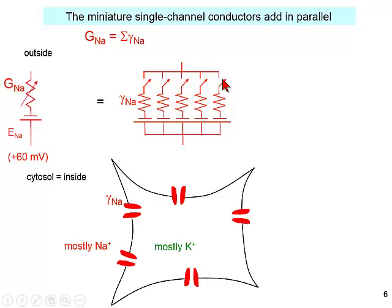Conductors add in parallel. Each channel has associated with it its conductance, its switch, and it's got a little battery associated with it. That battery is the Nernst potential for the ion that's permeant through that channel. There is a macroscopic conductance, which is simply the sum of all of the little single-channel conductances. And we make the macroscopic conductance look like a rheostat or potentiometer — but we understand it's actually just how many of these little switches are up or to the side at any point.